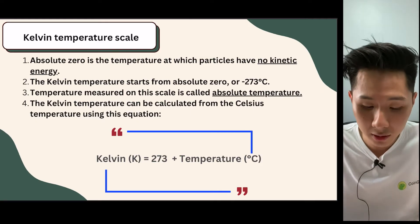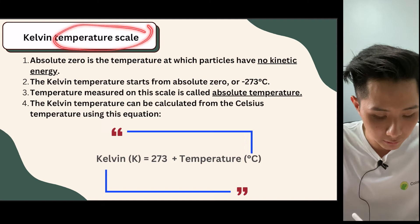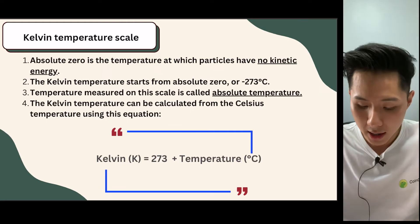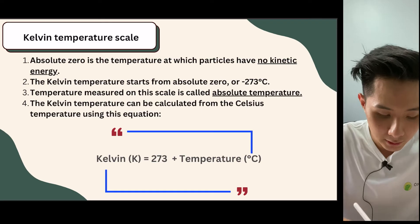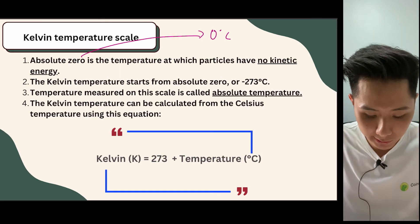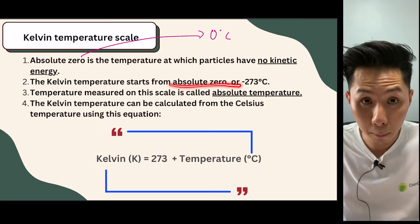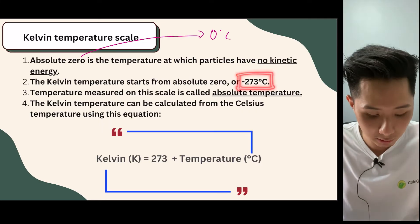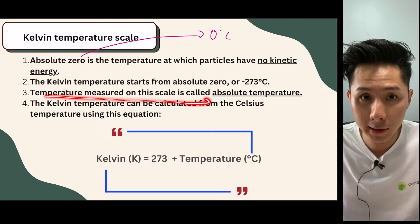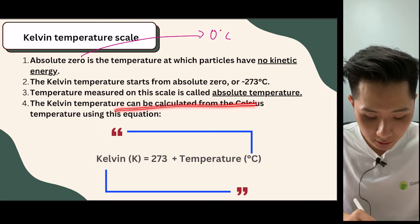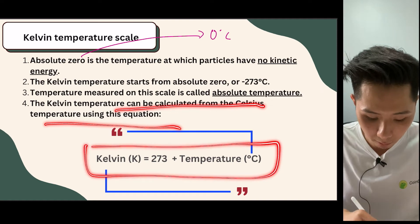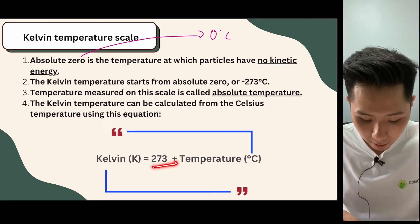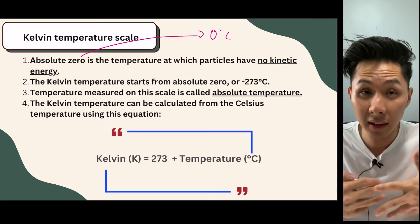And here, since we're studying temperature, there's another unit for temperature called Kelvin. So previously, we learned that absolute zero is the temperature at which particles have no kinetic energy. But that doesn't mean absolute zero is zero degrees Celsius. It means an even lower temperature called zero Kelvin, which is equivalent to negative 273 degrees Celsius. So temperature measured on the Kelvin scale is called absolute temperature. And the Kelvin temperature can be calculated from the Celsius using this formula here. We simply use the temperature of the surrounding, and then you sum it up with 273, you would have gotten the temperature in Kelvin unit.